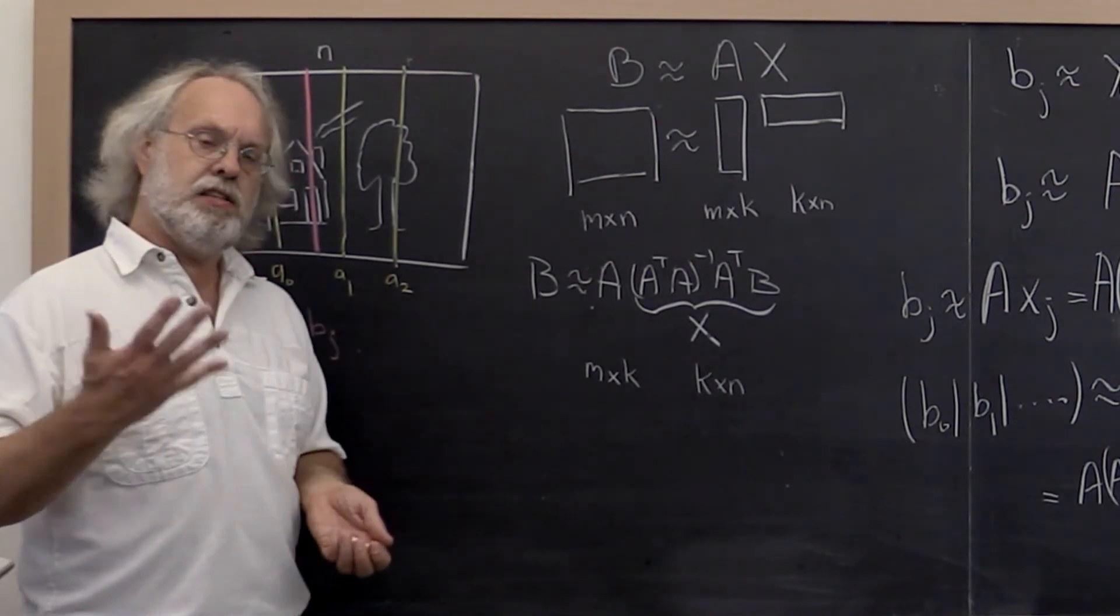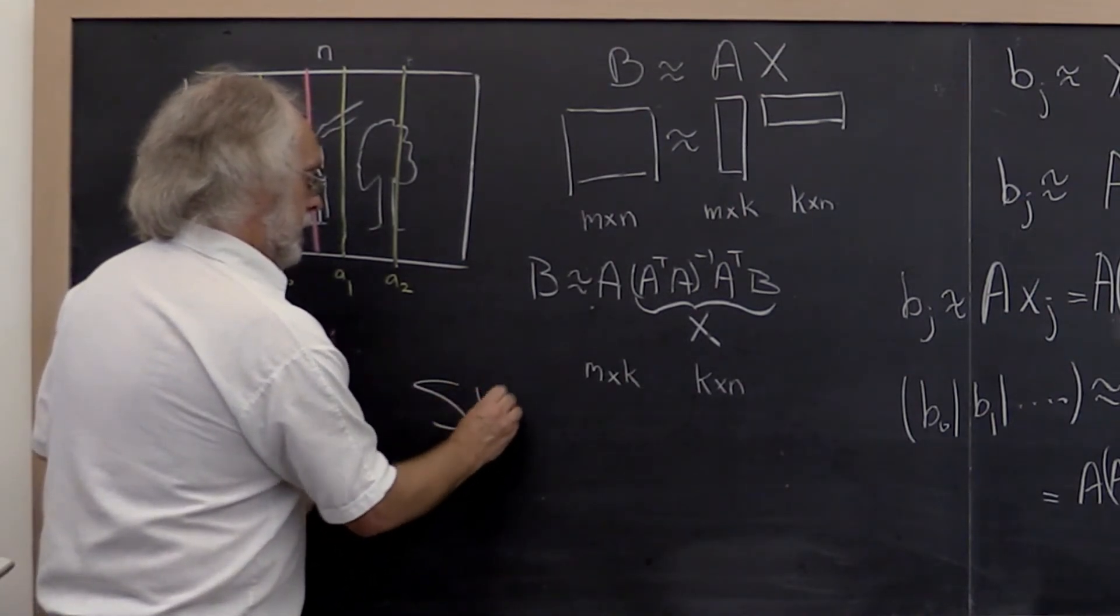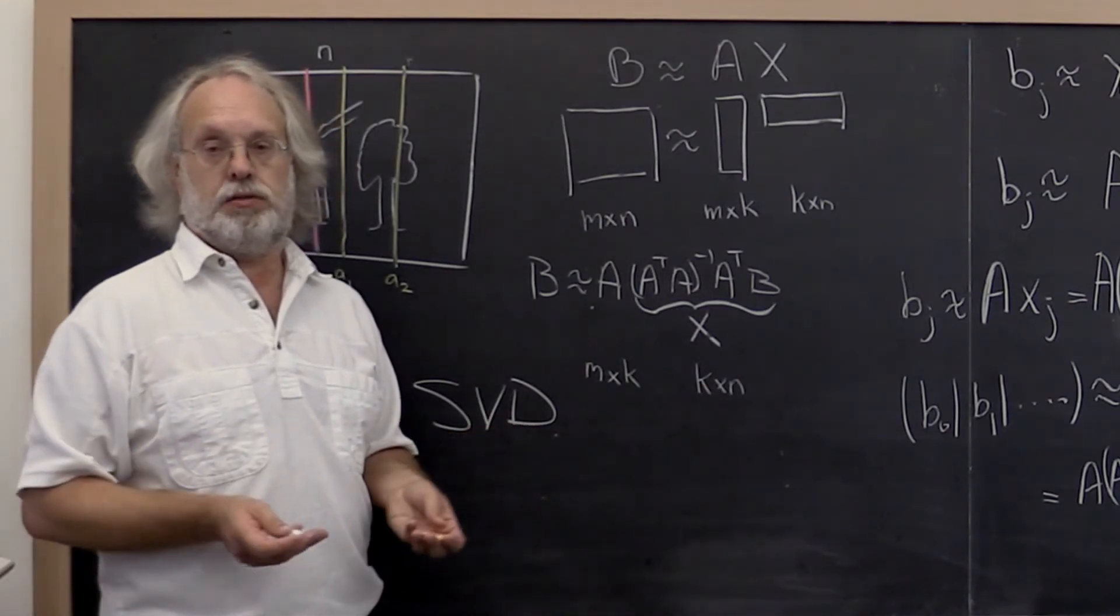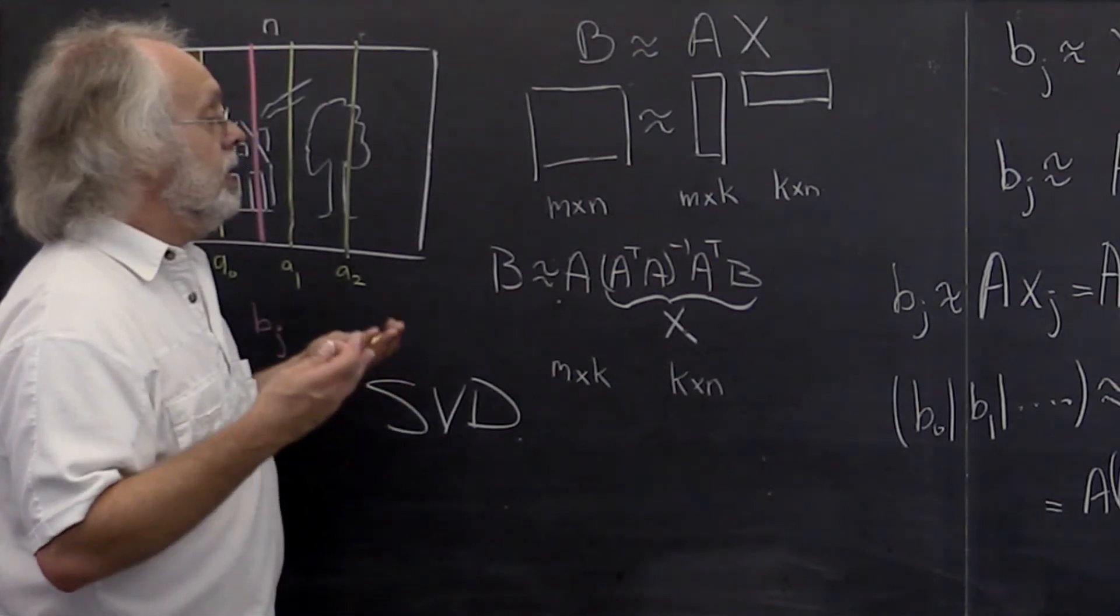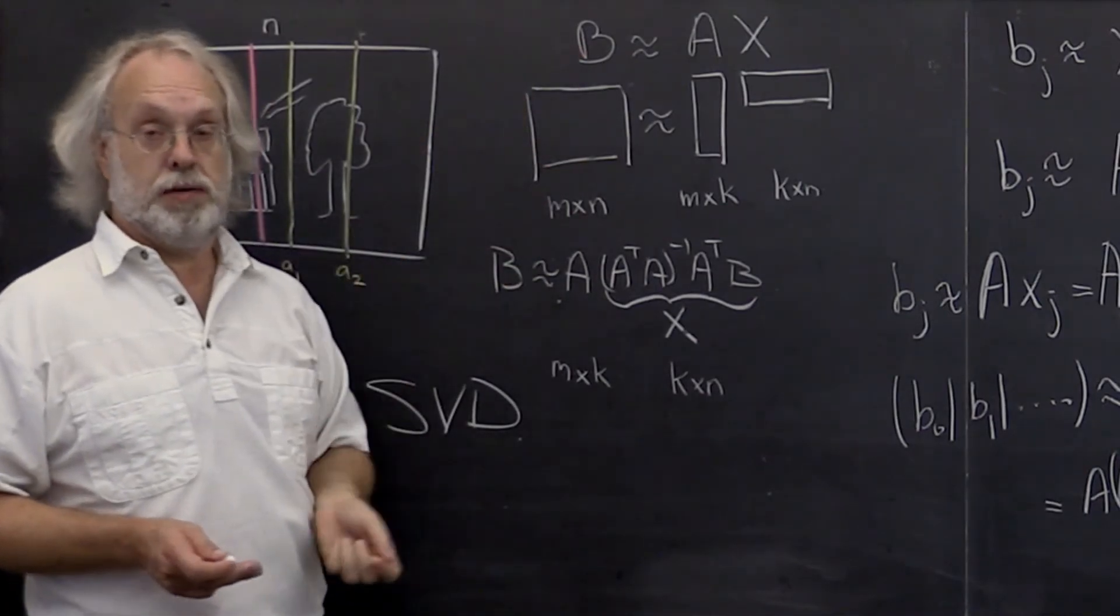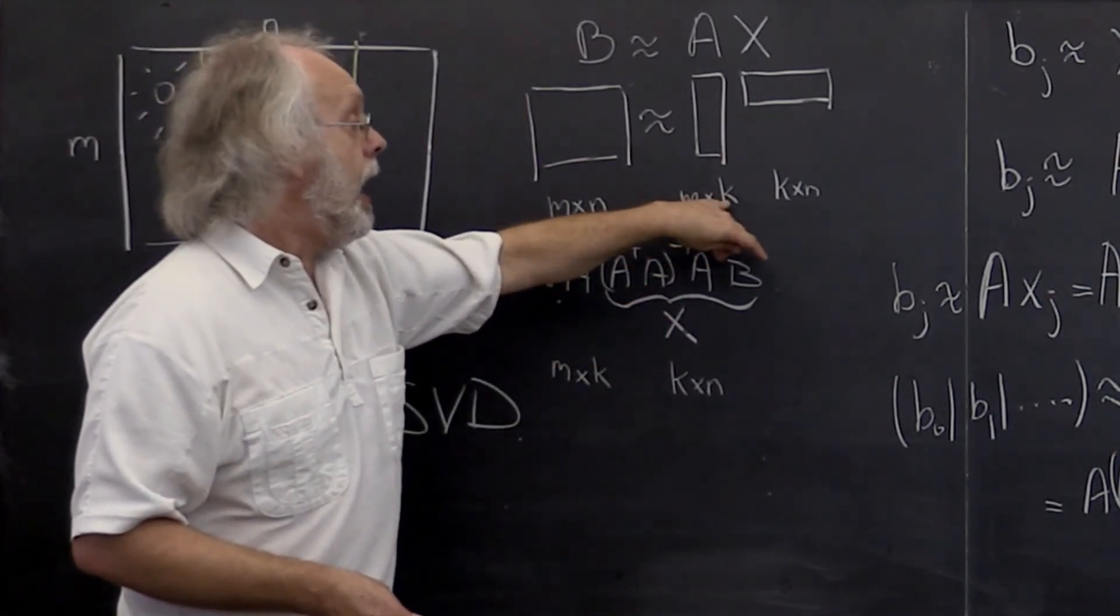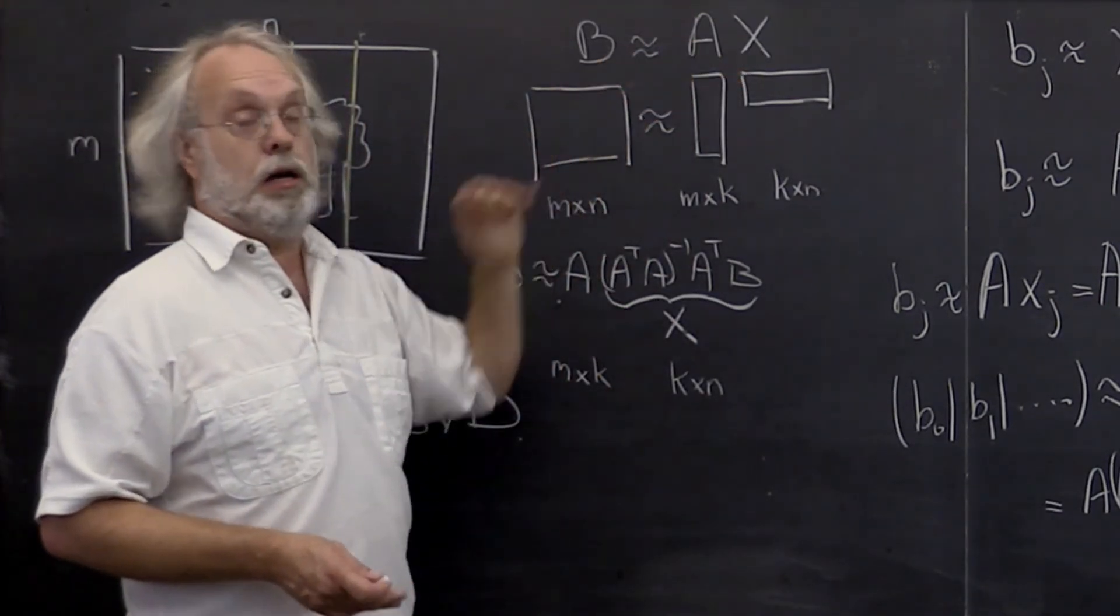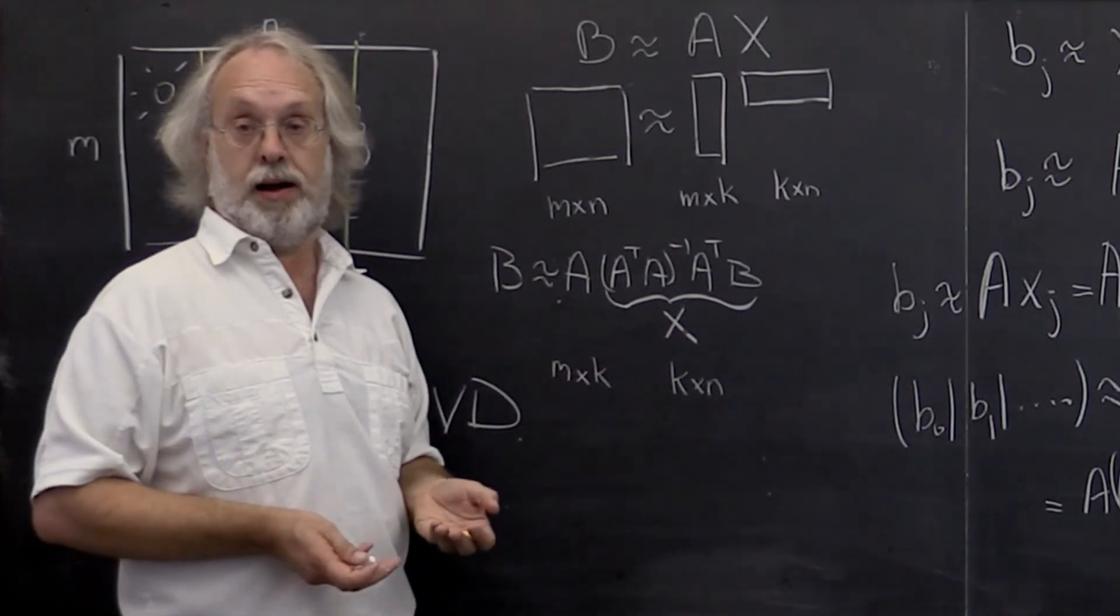Now all of those kinds of questions are answered by looking at something called the singular value decomposition of a matrix. The singular value decomposition allows you to find the optimal A and X for this approximation. It allows you to quantify how many columns you really should make part of your matrix A. What the k should be in that rank k approximation.